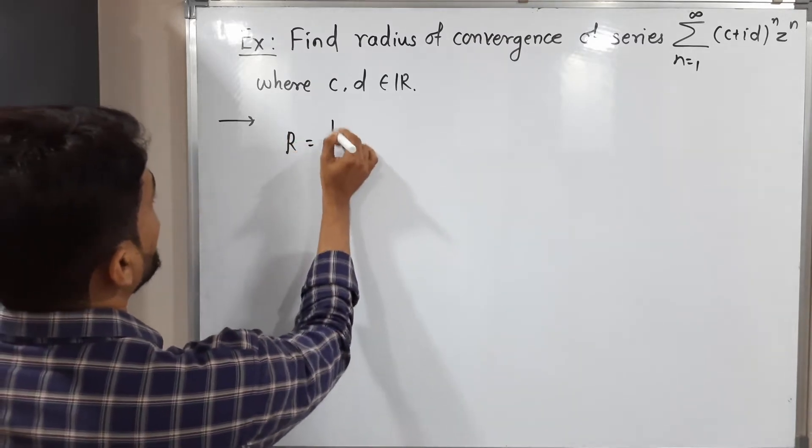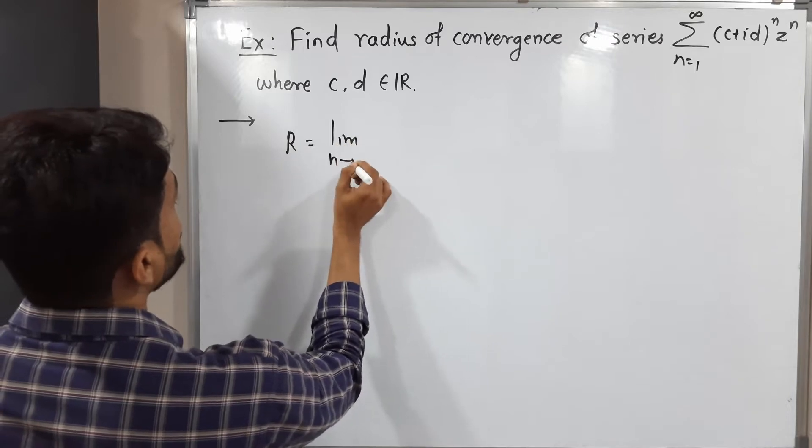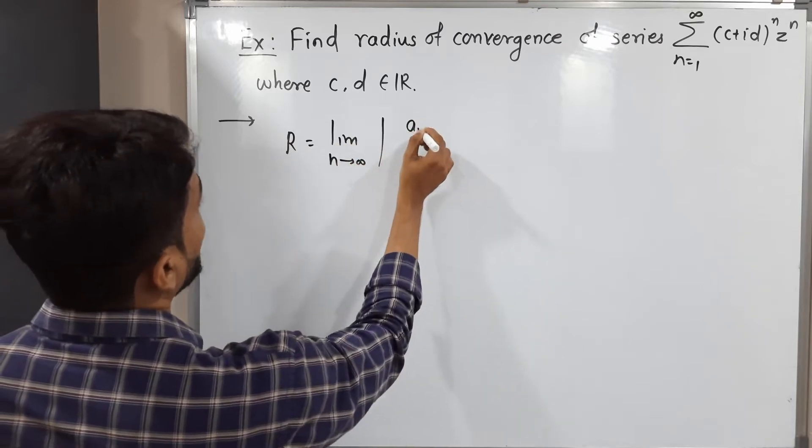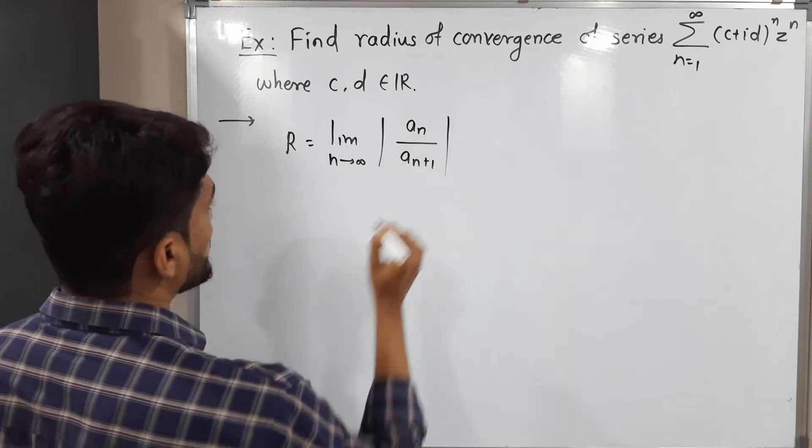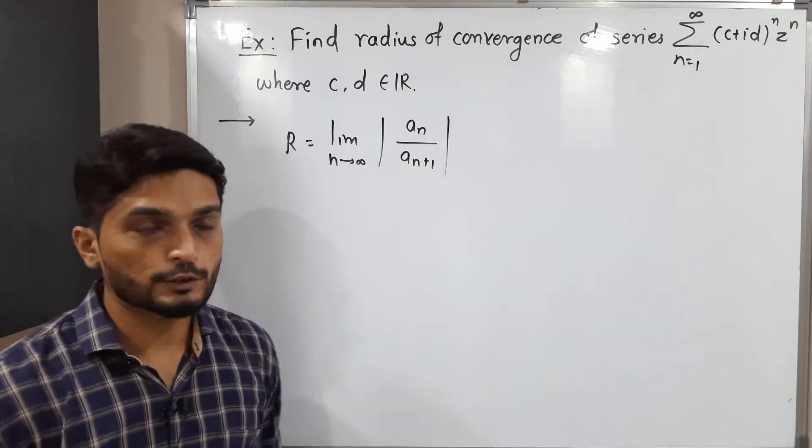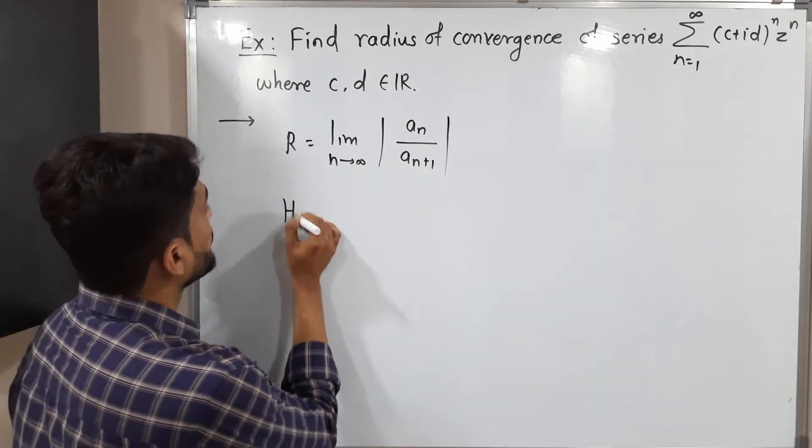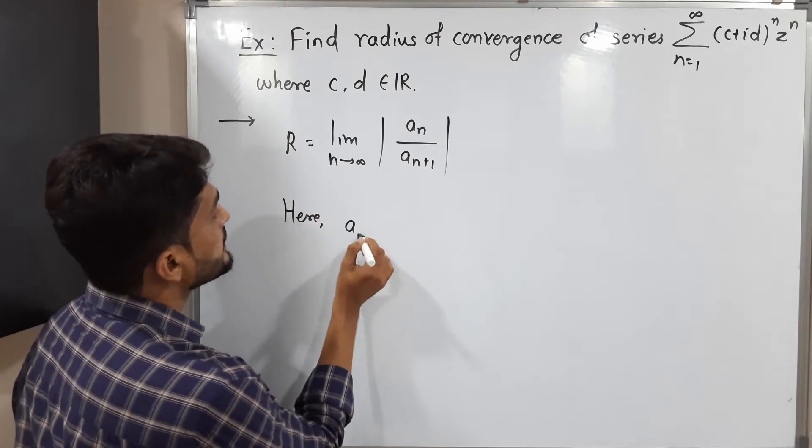You know the formula to find radius of convergence: R is equal to limit n tends to infinity mod a_n upon a_{n+1}. So let us find a_n and a_{n+1} first. Here, what is a_n? a_n is nothing but the multiple of z raised to n.